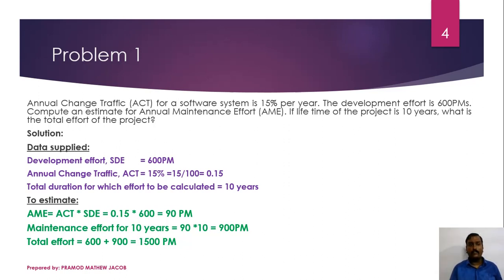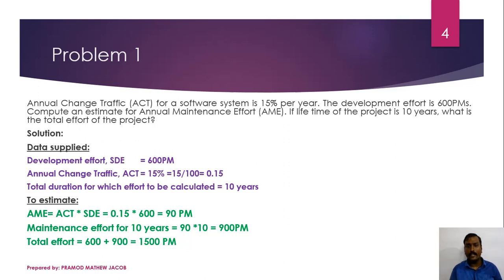We have to find the total effort of the project. The data supplied: development effort SDE is 600 person months, annual change traffic is 15%, so 15 divided by 100 equals 0.15 as the ACT rate, and the total duration is 10 years. Annual Maintenance Effort AME equals ACT into SDE, which is 0.15 into 600, which equals 90 person months. The maintenance effort for 10 years is obtained by multiplying AME into 10, that is 90 into 10, which equals 900 person months.